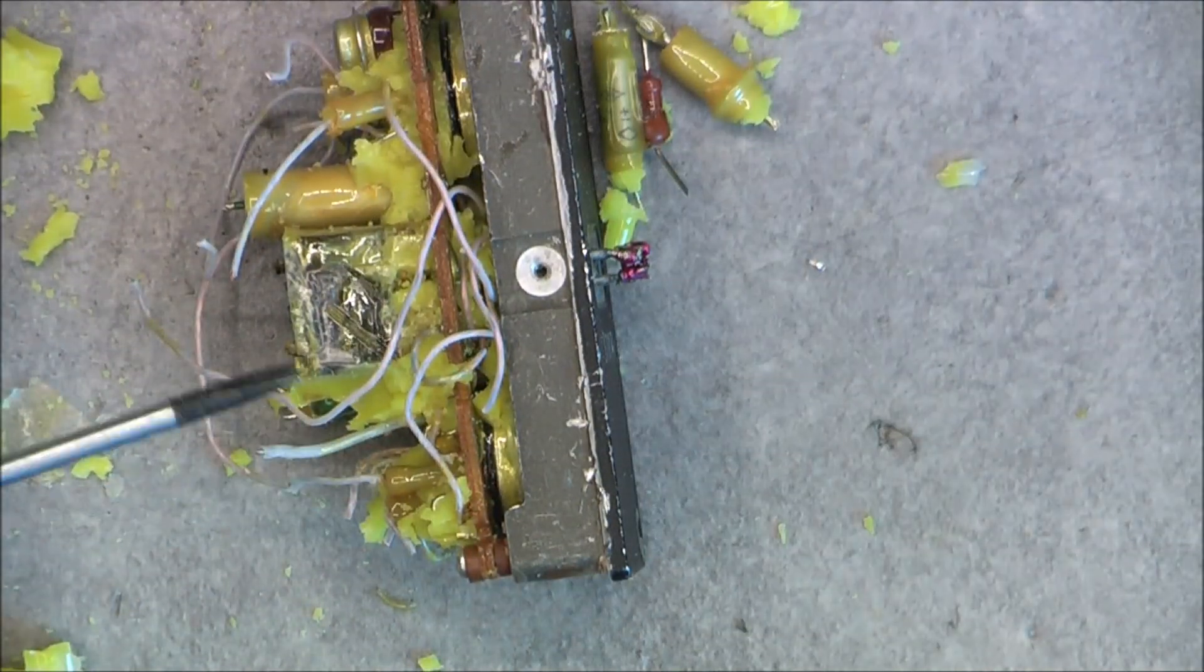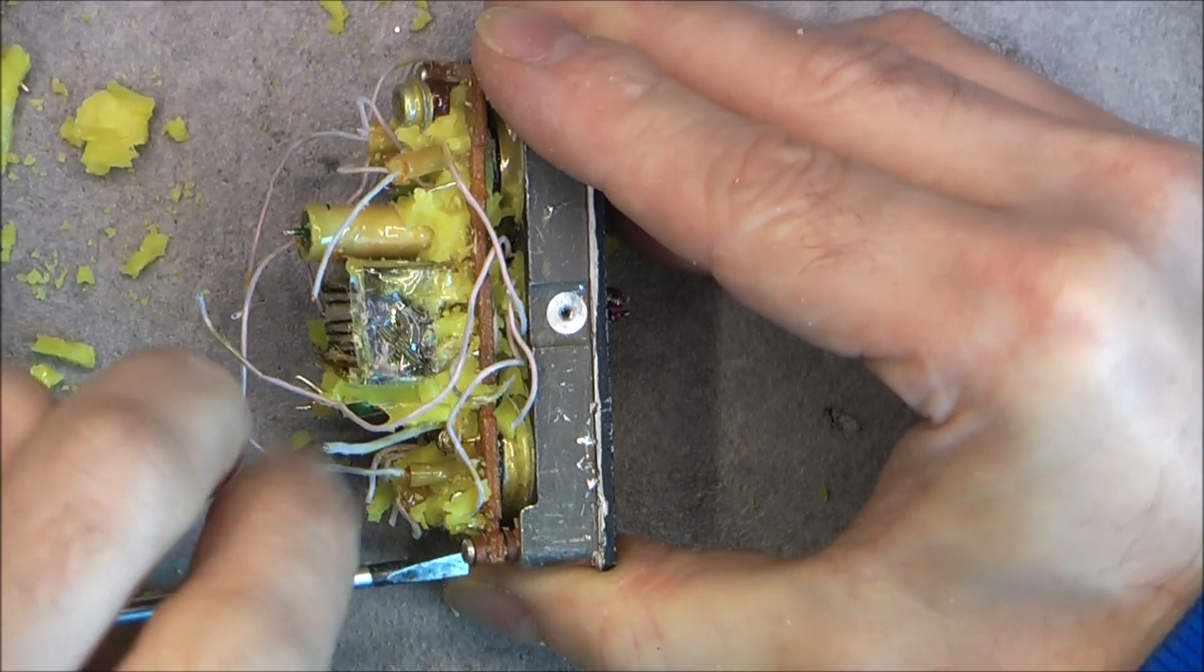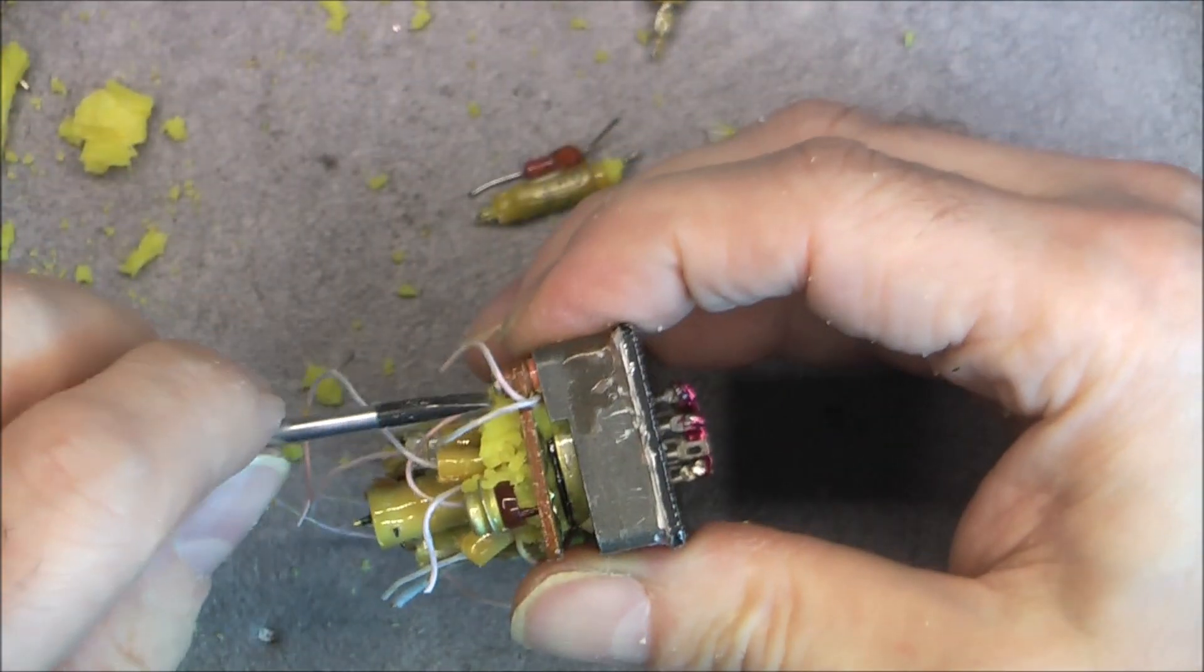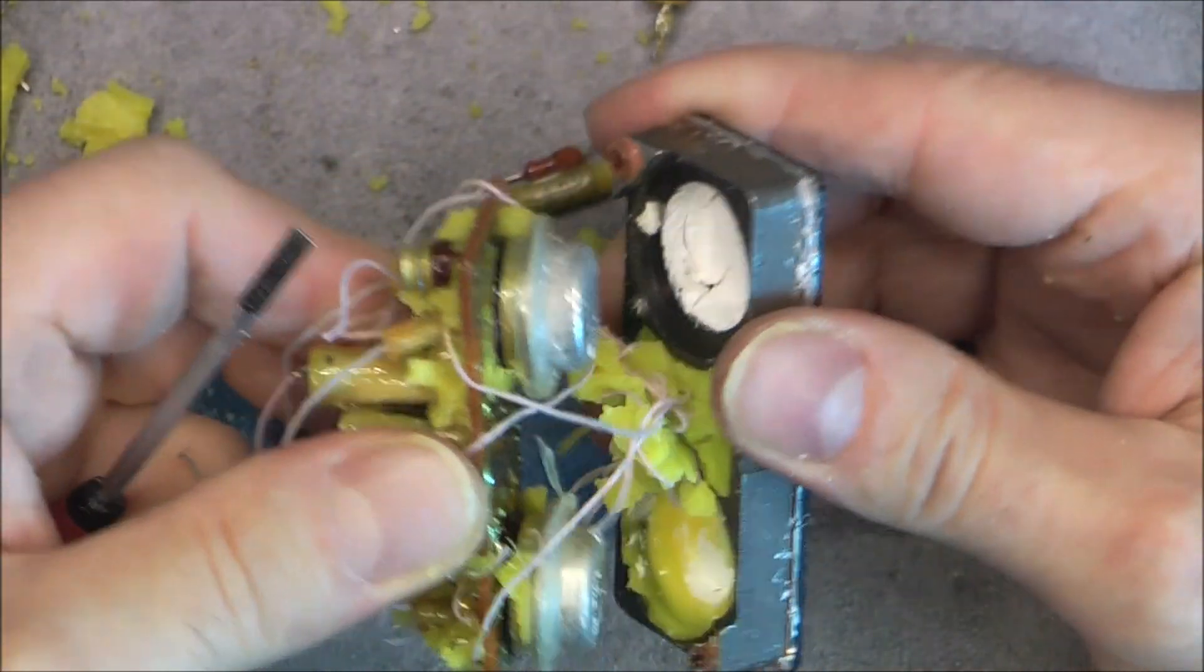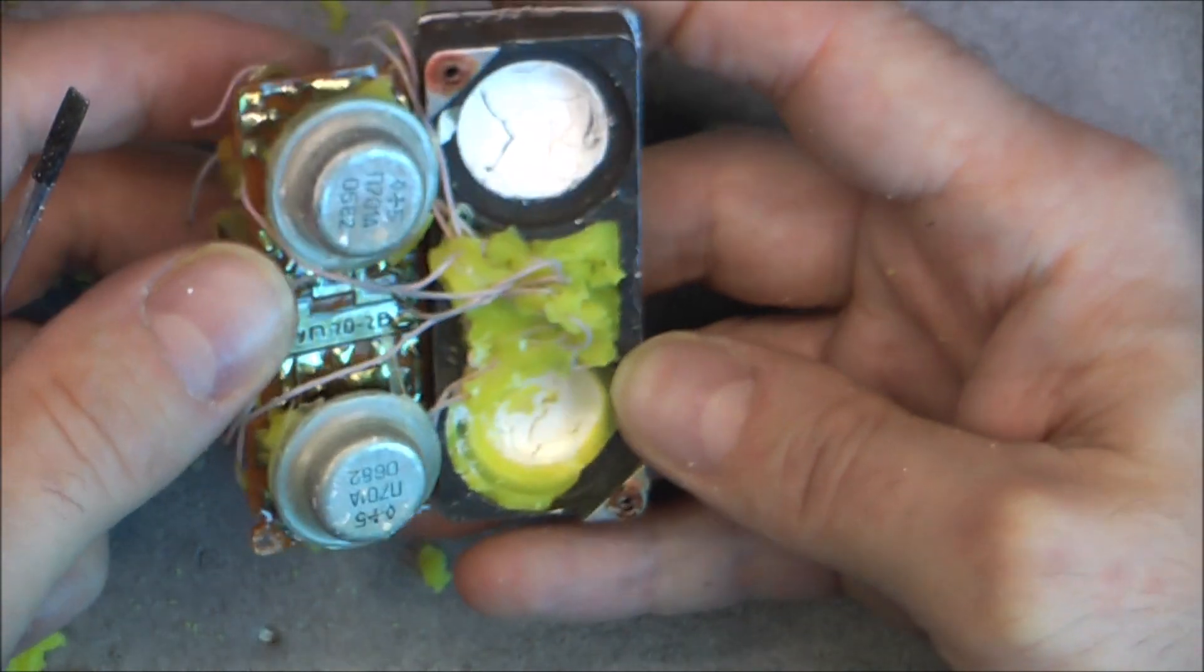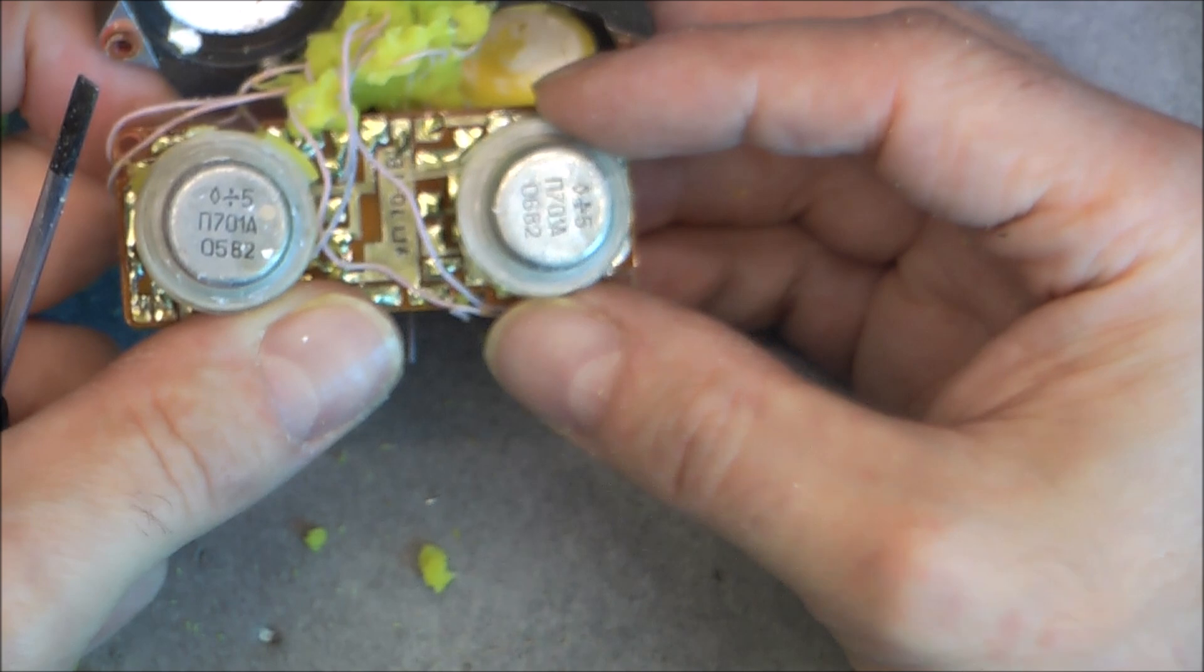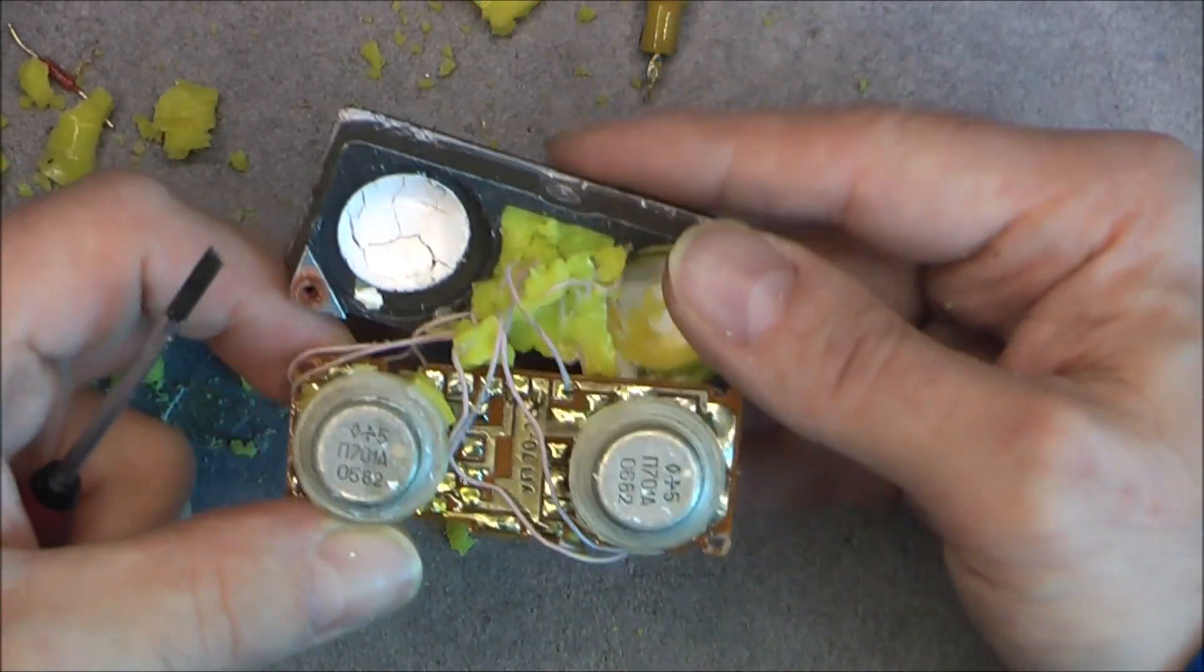Now I can, I believe, unscrew it from the base. And hopefully separate this part. So you can see all the wires going to the, I can see here, pass-through terminals here. And in here we have two 2P701A transistors, date code of 1982, some heat sink compound here.